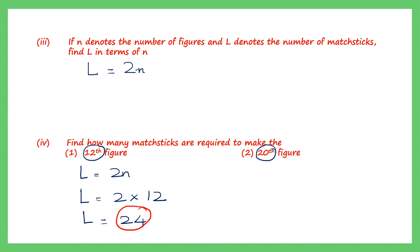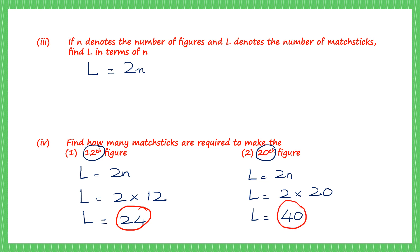For the 20th figure, using the same formula L = 2n where n = 20: L = 2×20 = 40. The number of matchsticks in the 20th figure will be 40. With this, we come to the end of this lesson. I hope all of you have understood patterns. Thank you, children.